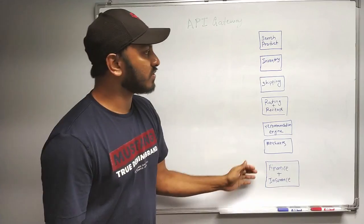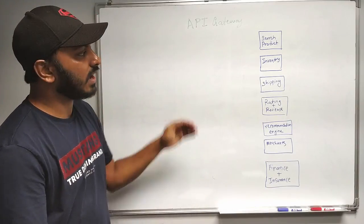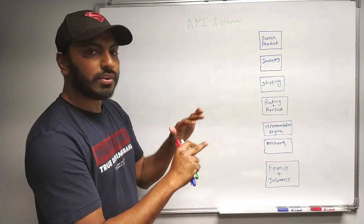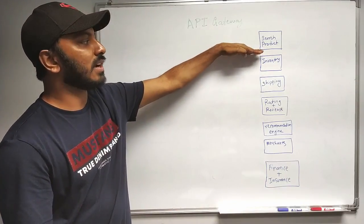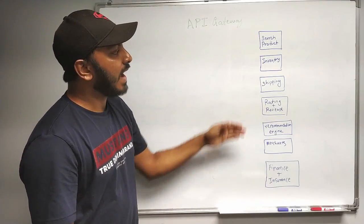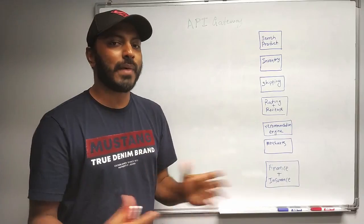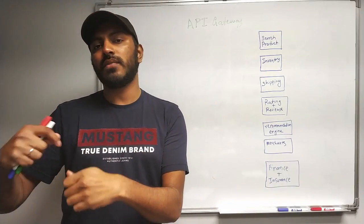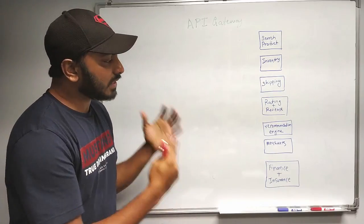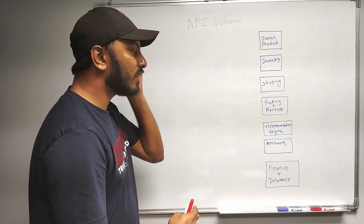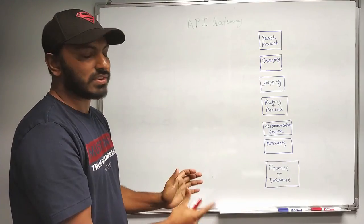If you look at these microservices, none of them have the same functionality — everything is in a totally different domain. Product listing and search cannot be combined with any of these. Inventory is totally different. Shipping is more of a backend involving packing, shipping, and all of that. These are the kind of services which can each offer individual services on their own.